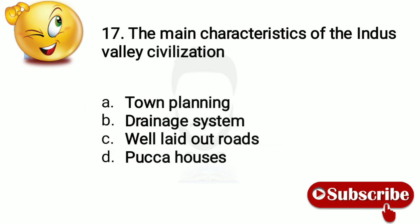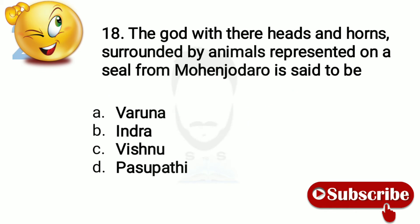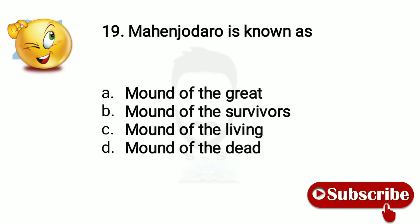Question 17: The main characteristic of the Indus Valley civilization — which is town planning. Question 18: The god with the horns surrounded by animals represented on a seal from Mohenjodaro is said to be — Mound of Death.